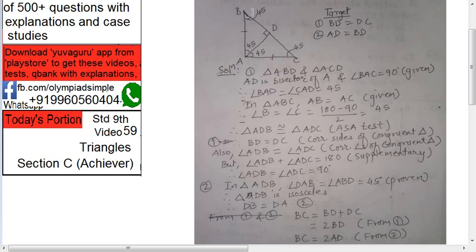Now, once this is isosceles, means DA equals to DB. So that's what we have to prove. Now, BC equals to what? BD plus DC, but they are equal, so 2BD. But BD is equal to AD, so 2AD. So BC equals to 2AD. That's what we have to prove.